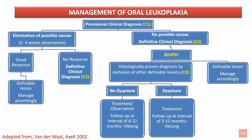Management of oral leukoplakia: once a provisional clinical diagnosis is set, one should try to identify all possible causes other than tobacco. If there are no other possible causes, it is a definitive clinical diagnosis of leukoplakia. If possible causes are found, they should be eliminated and the lesion observed for 2 to 4 weeks. If there is a good response, it was a definable lesion related to that cause and should be managed accordingly. If there is no response, the definitive clinical diagnosis of leukoplakia is confirmed.